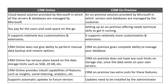The last difference is that CRM online supports automatic updates to future versions. Whereas for the on-premise version, updates need to be installed separately — you must first download them from the internet and then update or install them in your on-premise environment.